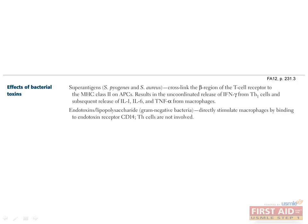Certain bacterial toxins work by inappropriately activating the host's immune system. The toxins of S. pyogenes and S. aureus, for example, are capable of cross-linking the beta regions of T cell receptors to the MHC2 molecules on antigen-presenting cells, which causes a massive release of interferon gamma from Th1 cells, which in turn triggers release of IL-1, IL-6, and TNF-alpha from macrophages, resulting in a massive autoimmune response that can lead to shock. Endotoxins and lipopolysaccharides from gram-negative bacteria stimulate macrophages directly through interaction with CD14, bypassing Th cells altogether.